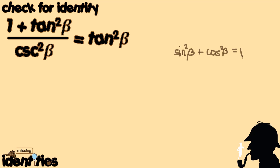The other forms of Pythagorean identities are taken from this by applying a certain process. For example, if we divide all terms by cosine squared beta: sine squared beta divided by cosine squared beta is tangent squared beta, plus cosine squared beta divided by cosine squared beta is 1, equal to 1 over cosine squared beta, which is secant squared beta. This gives another Pythagorean identity.